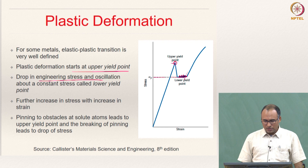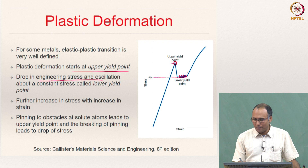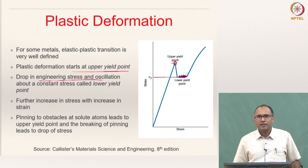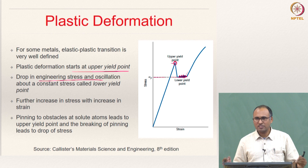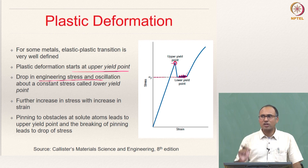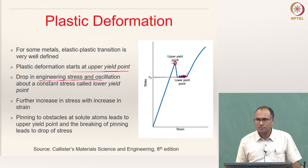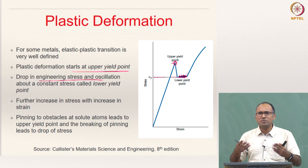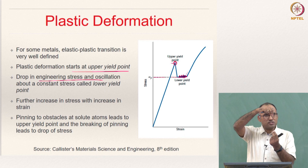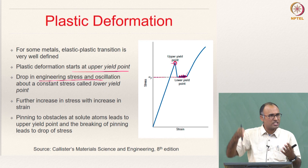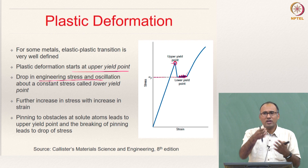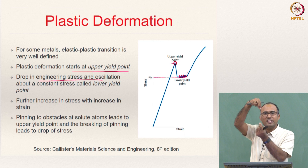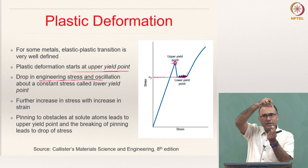Why does this upper yield point dropping happen and why are there these oscillations? Steel is an alloy of iron and carbon — mild steel is usually a plain carbon steel, so the solute atoms are carbon. Carbon is smaller than iron. What happens is when the dislocations are moving — plastic deformation means dislocation motion — these dislocations, because carbon is dispersed everywhere in the alloy, have solute atoms interacting with them everywhere. When a dislocation is moving, it gets pinned near an obstacle, and that obstacle is the solute atom, meaning the carbon atom is actually restricting the motion of the dislocation.